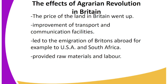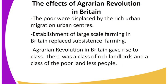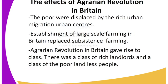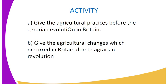The revolution also provided raw materials and labor. The poor were displaced and had to leave their land to the rich and migrate to urban centers. There was establishment of large-scale farming in Britain, and the Agrarian Revolution gave rise to social classes of people.